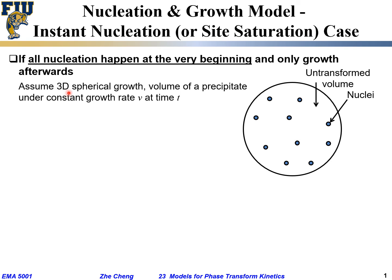For simplicity, let's assume 3D spherical growth — the nucleus starts as a small sphere and gets larger and larger. The volume of a single spherical precipitate under a constant growth rate (where dr/dt = v, a constant) is given by the equation for a sphere: V = (4/3)πr³.